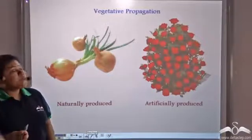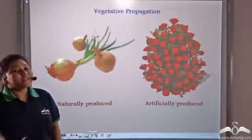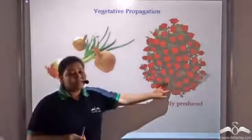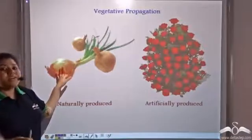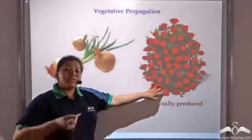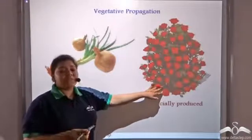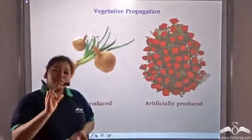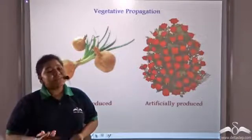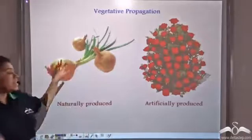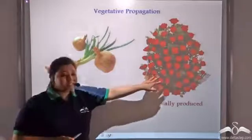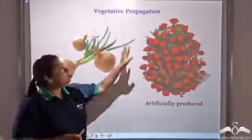We have talked about vegetative propagation and seen two examples: onion and rose. Notice that a new plant grows from an onion naturally. But in the case of a rose, if you need a new plant from an existing rose plant, you have to cut a portion of the stem, sow it in the soil, and after a few days you will get a new rose plant. So onion is an example of naturally occurring vegetative propagation, whereas rose cutting is an example of artificially induced vegetative propagation.